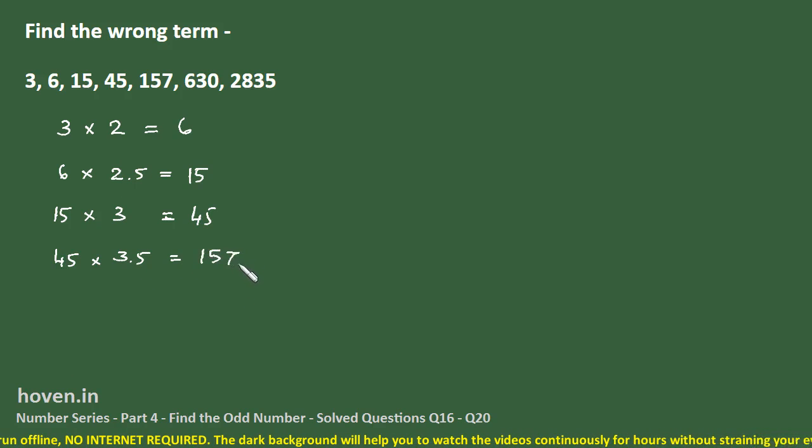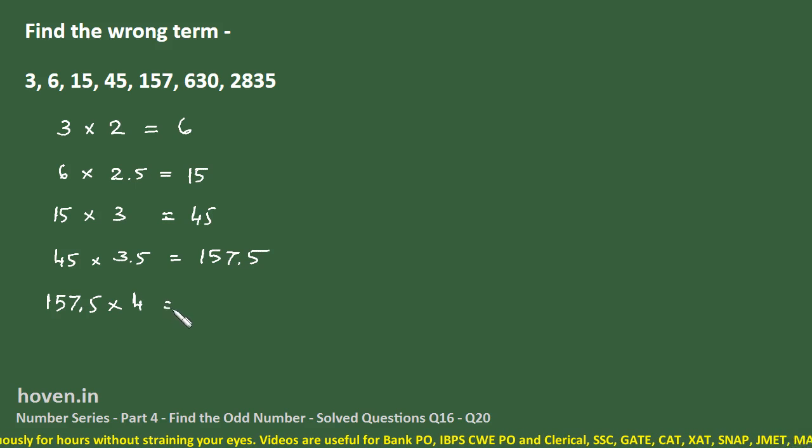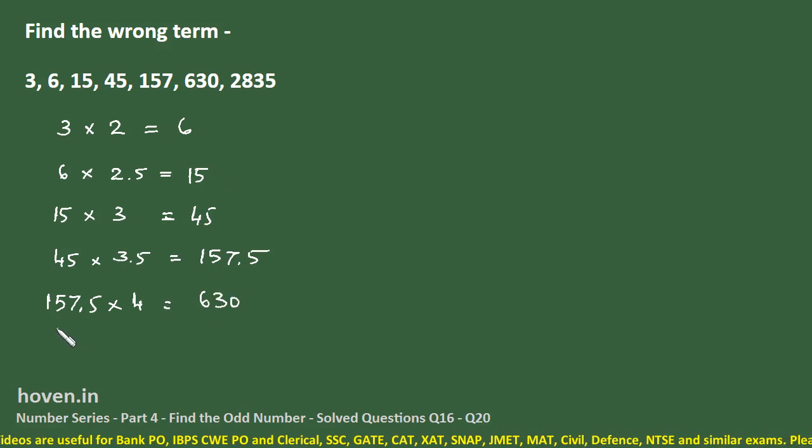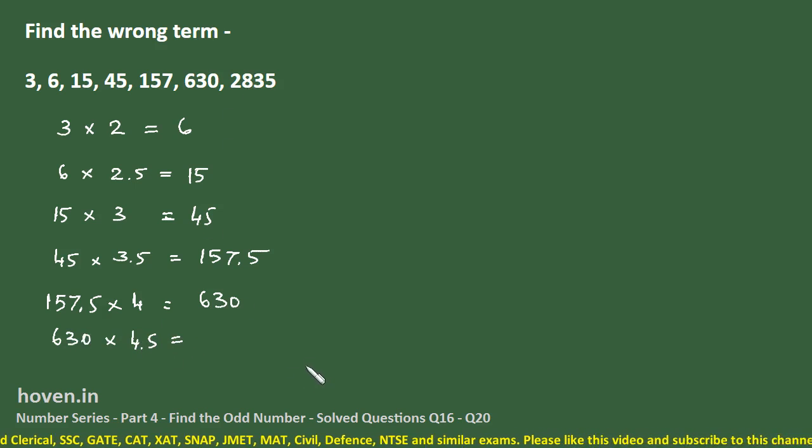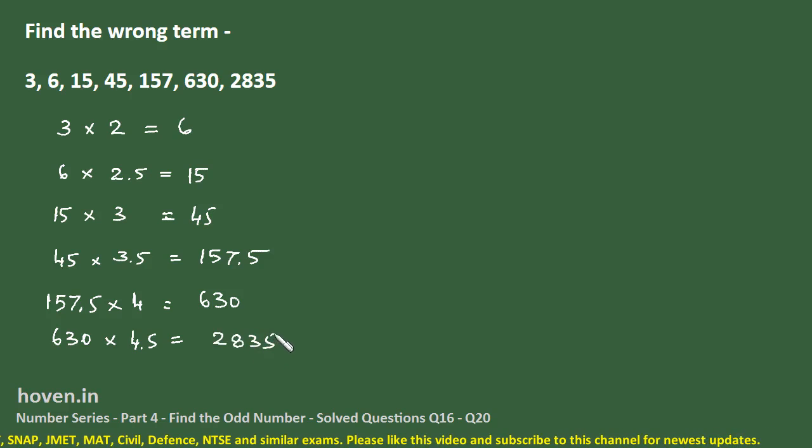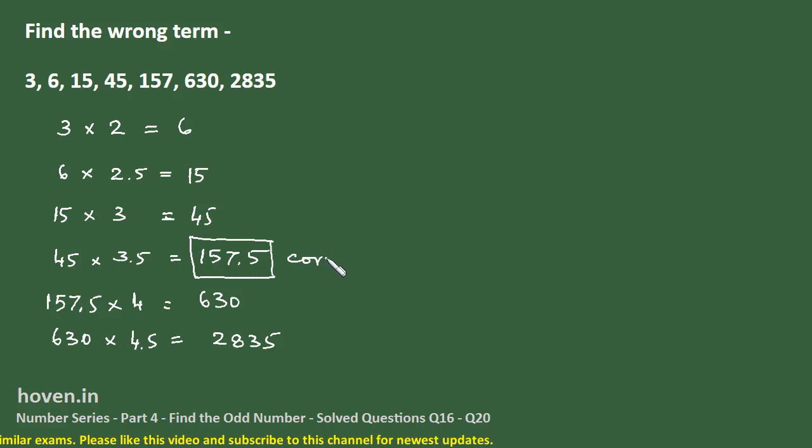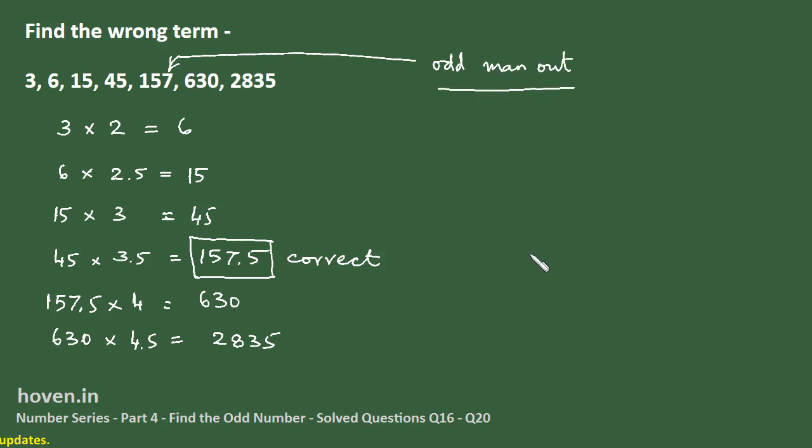So let us extend it to 45 times 3.5. So this calculation should be 157.5. Some matching is there, but this point 5 is not matched. Let us extend the logic: 157.5 multiplied by 4 gives us 630. Now this 630 is matching. So probably we are at the right point. Multiply it by 4.5. Now we should be able to get this one. And yes, if you multiply we do indeed get 2835. Therefore this should be correct, and this 157 is indeed the odd man out for this question.